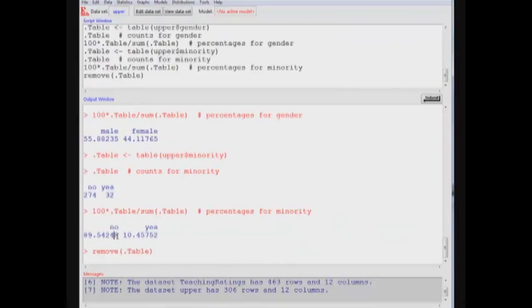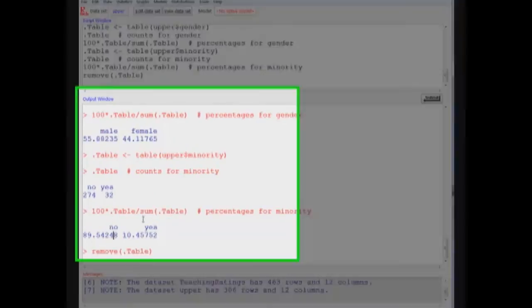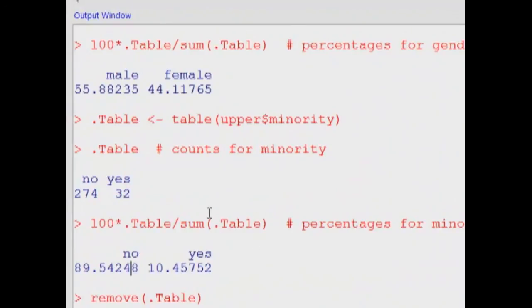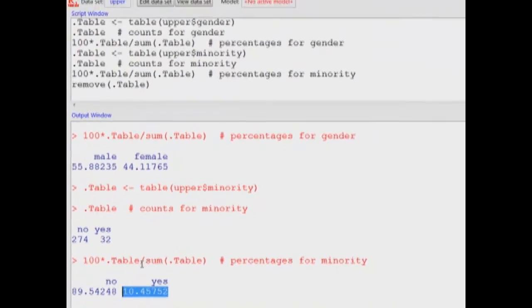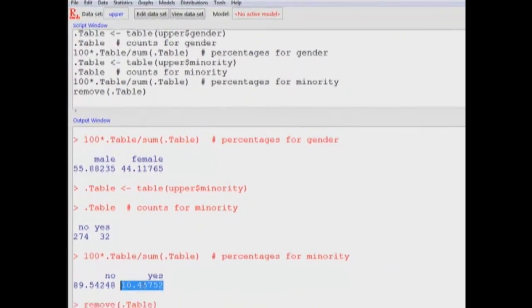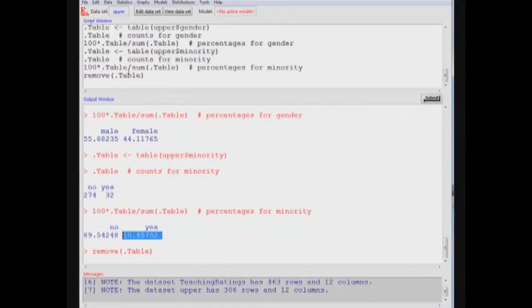You could see that this is minority, so 10.45% teaching courses in the upper division are minority. And if I do the same for lower, I've already created that lower dataset.